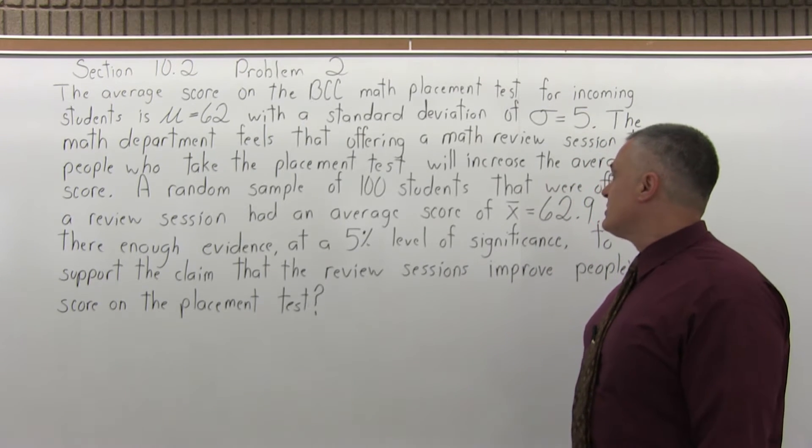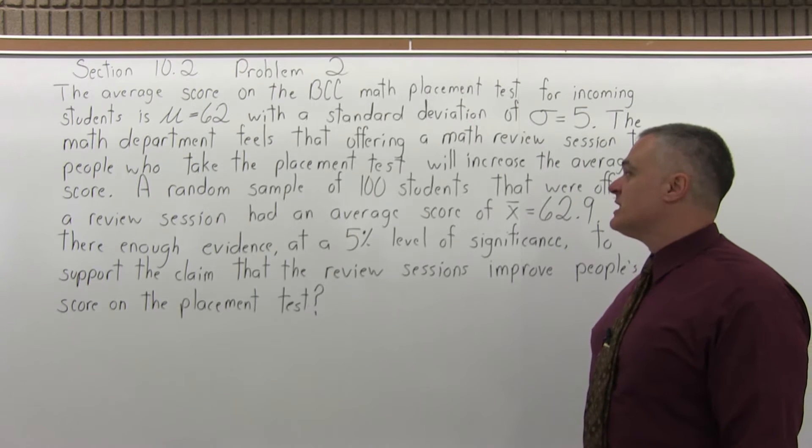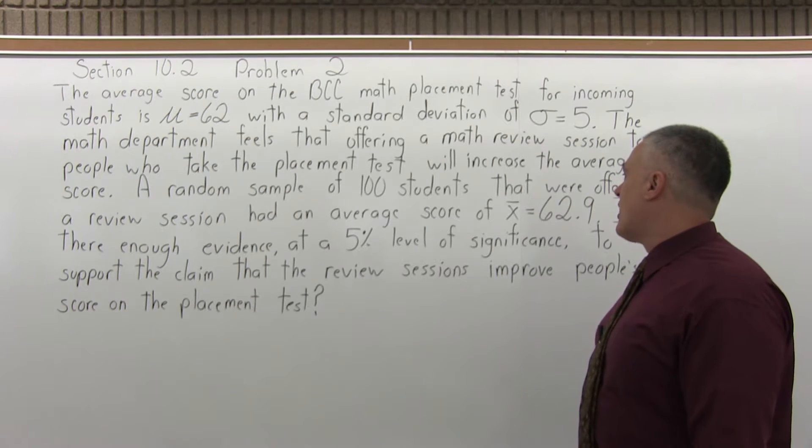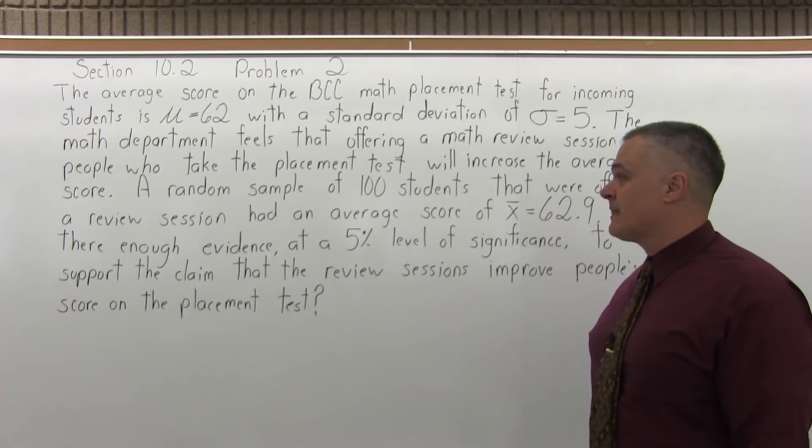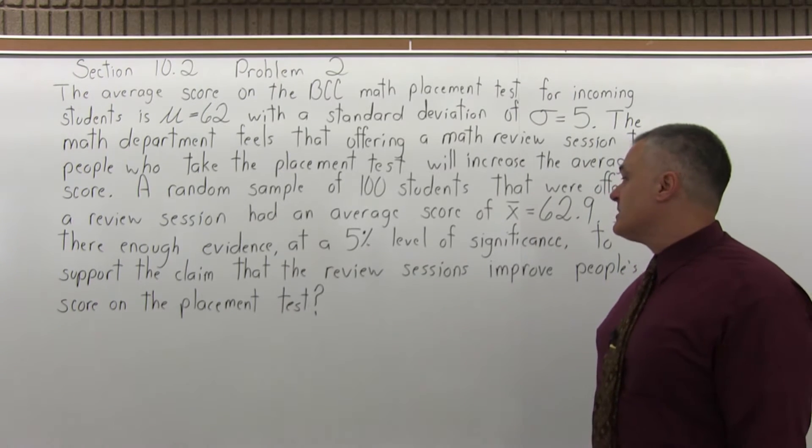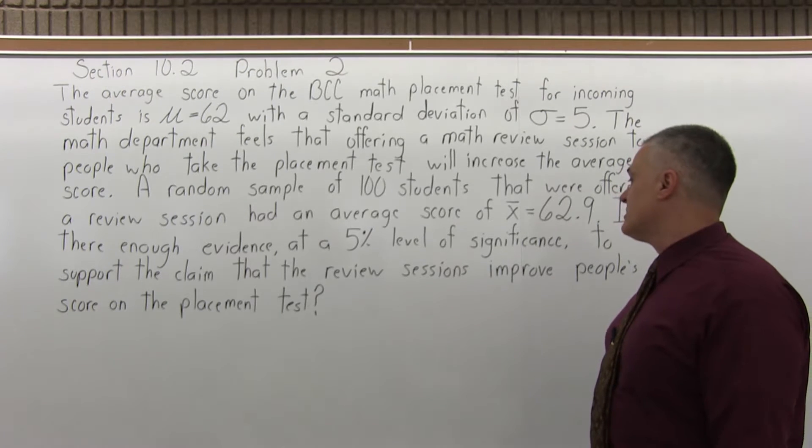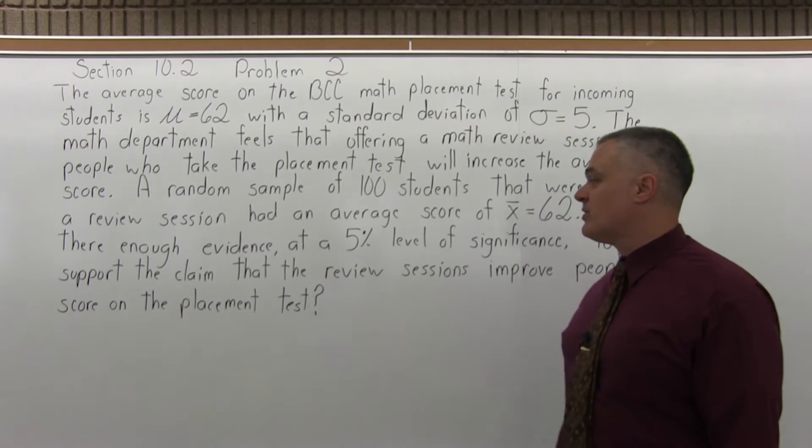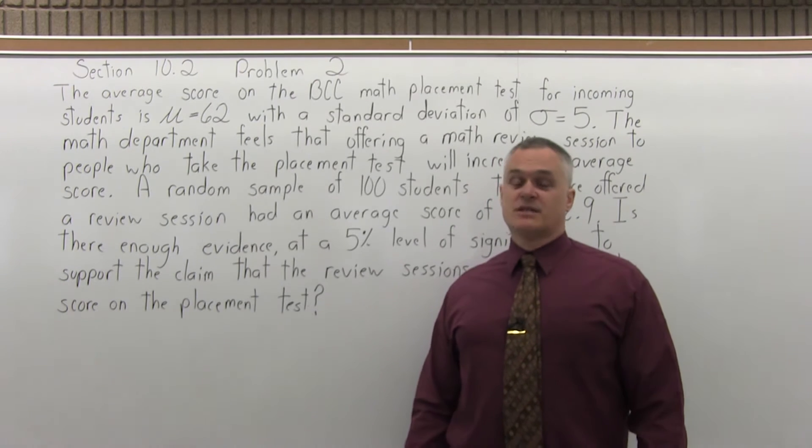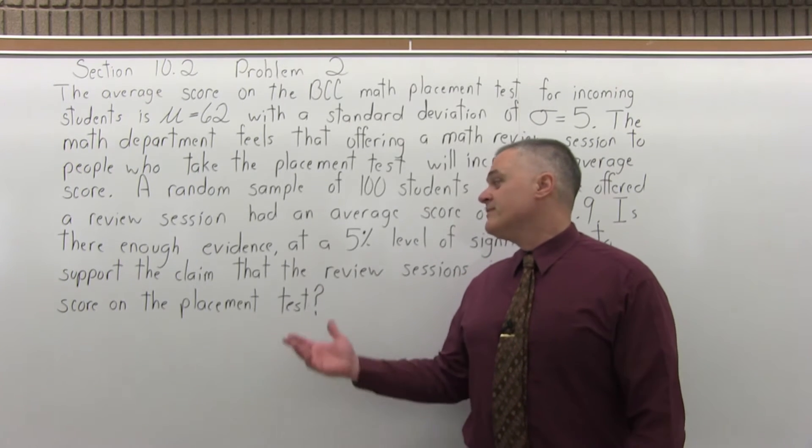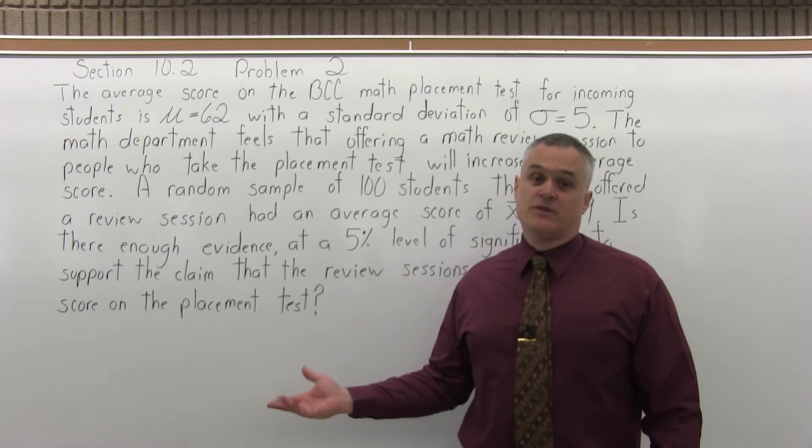A random sample of 100 students that were offered a review session had an average score of x bar equal to 62.9. Is there enough evidence at a 5% level of significance to support the claim that the review sessions improve people's score on the placement test? So this is a hypothesis test. This is a six step process to determine whether this seems like a reasonable claim or if it's not a reasonable claim.